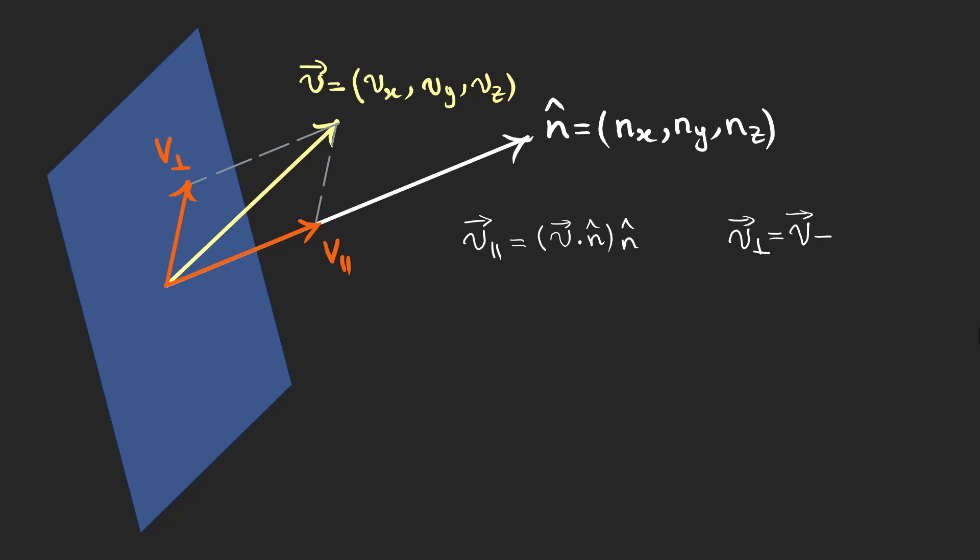Also, the perpendicular component can be derived by a vector subtraction because v is the vector addition of the perpendicular and the parallel components. Pay attention that all these vectors lie in the same plane, which is perpendicular to the blue plane. The rotation doesn't affect the parallel component, but changes the perpendicular one.